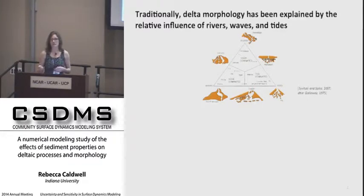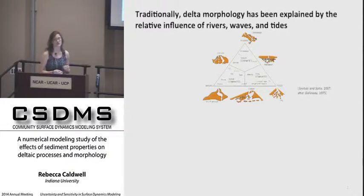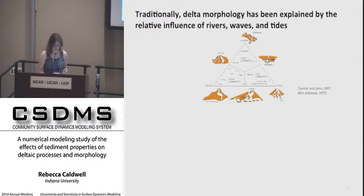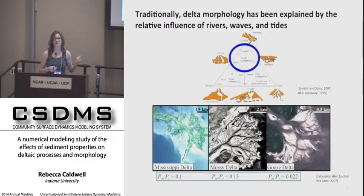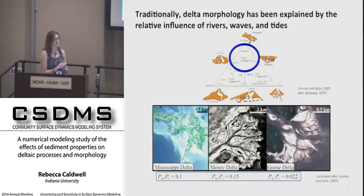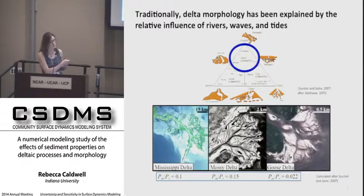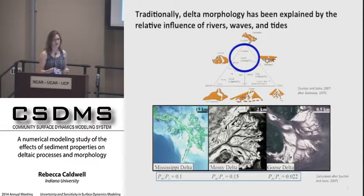Traditionally, we think of delta morphology as controlled by the relative balance of rivers, waves, and tidal energy. Although this explains much of the morphologic variation we observe in nature, it does not explain all of it. Take, for example, these three deltas, which we call river-dominated, based on estimations of their marine-to-river power ratios. These ratios mean they plot in the same location on that diagram and should have similar morphologies, but instead they actually look quite different.